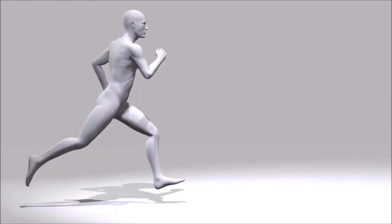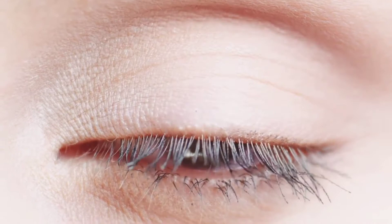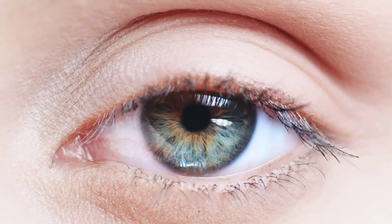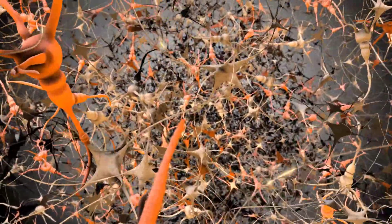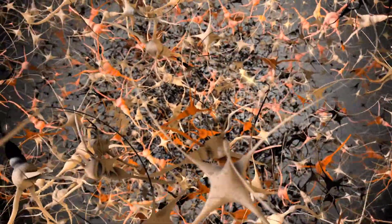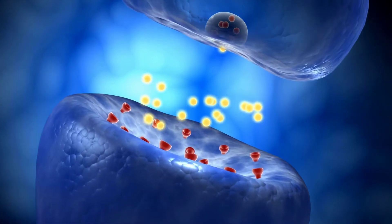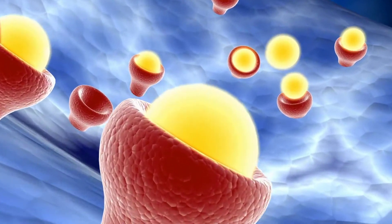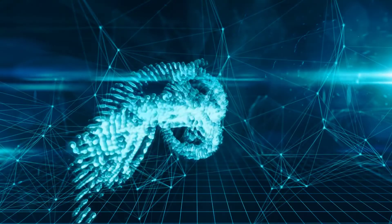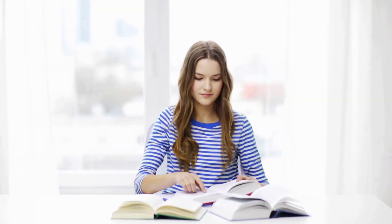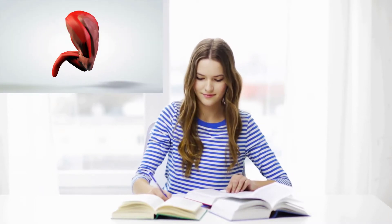Form is closely related to function in all living things. For example, the thin flap of your eyelid can snap down to clear away dust particles and almost instantaneously slide back up to allow you to see again. At the microscopic level, the arrangement and function of the nerves and muscles that serve the eyelid allow for its quick action and retreat. At a smaller level of analysis, the function of these nerves and muscles relies on the interactions of specific molecules and ions. Even the three-dimensional structure of certain molecules is essential to the function.